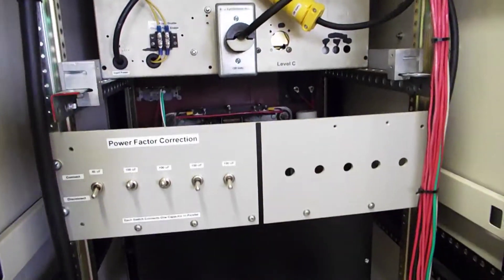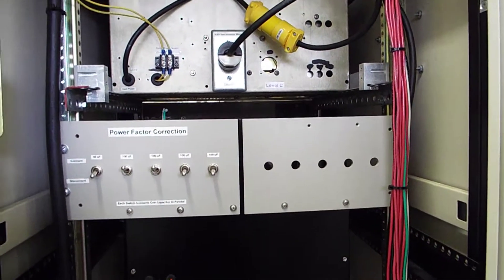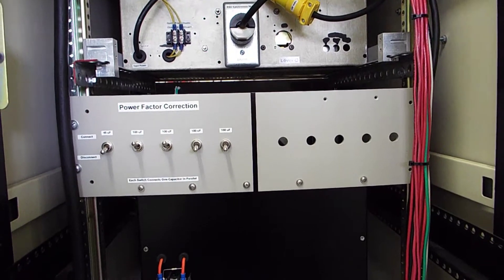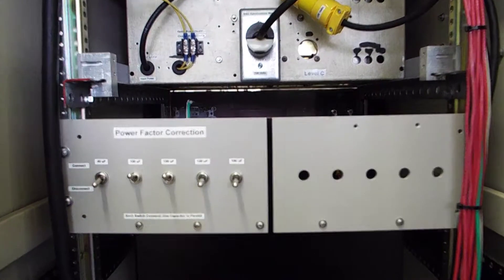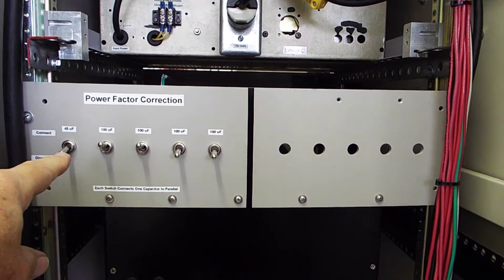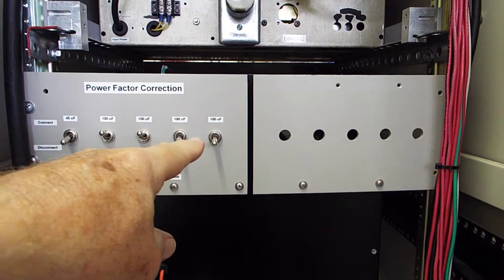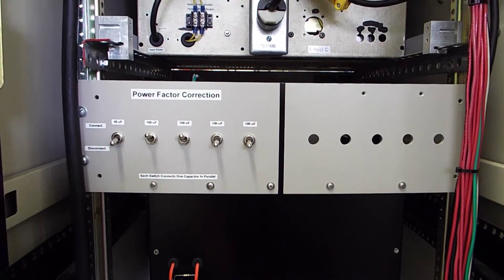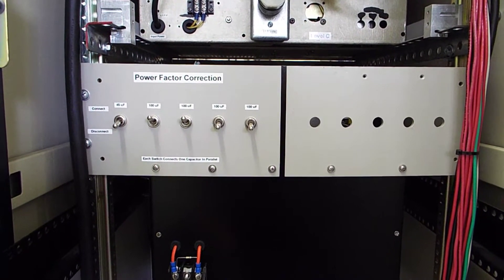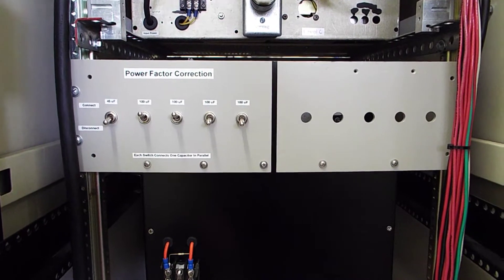And then moving down to the next level, this is the control for the power factor correction. And I can select different values of capacitance with these switches. I've already determined what I need for my pole transformer and Tesla coil.